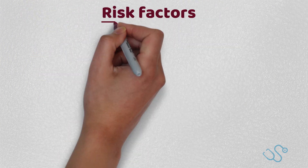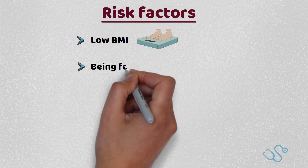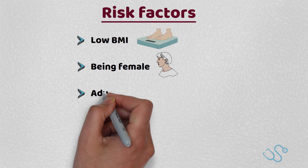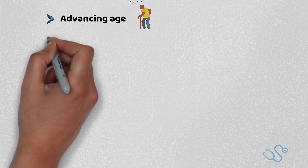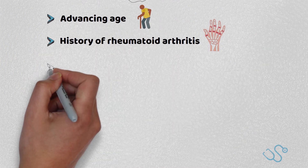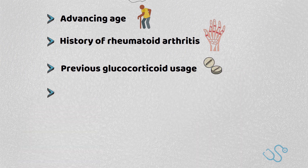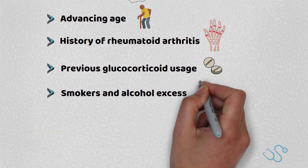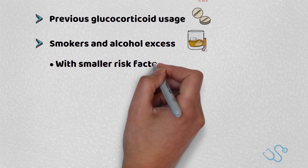Some of the key risk factors include a low BMI, being female, advancing age, history of rheumatoid arthritis, previous steroid usage, and smoking and alcohol excess, with a number of smaller risk factors including premature menopause and certain endocrine conditions.